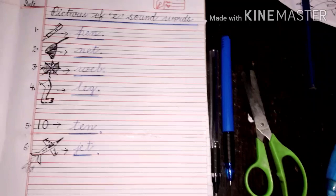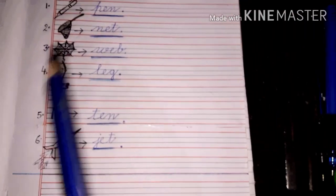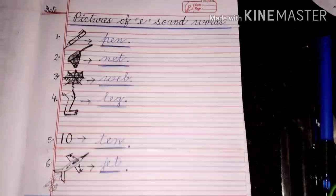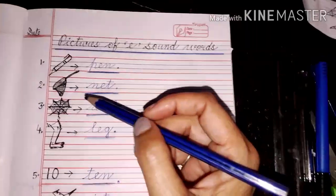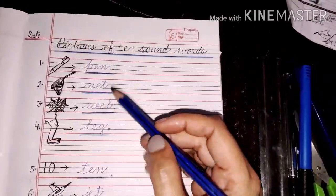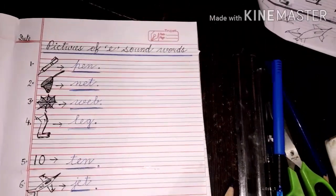So children we have drawn few pictures of E sound words and we have written the name of them. So children we have completed today's work. Now after completing the work I have drawn a finishing line here. So you will do the same.